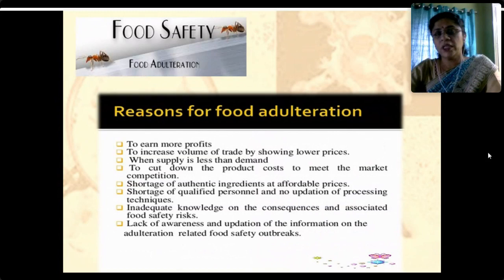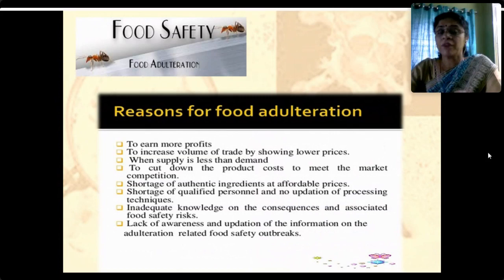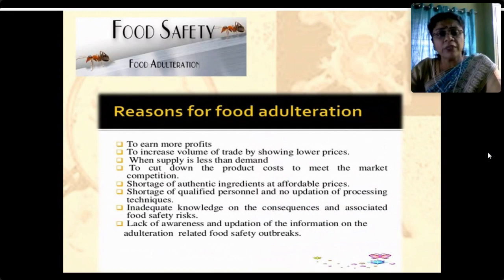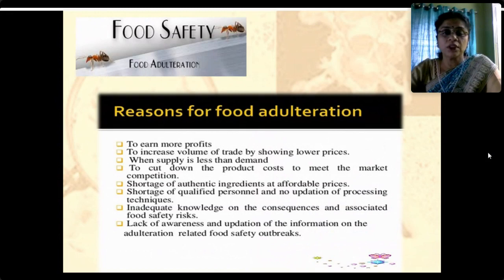The main motive behind adulteration is to earn more profits — to increase volume of trade by showing lower prices when supply is less than demand. Our population is increasing enormously, creating huge demand with very less supply. This shortage pushes food manufacturers and traders to cut down product cost and meet market competition. Shortage of authentic ingredients at affordable prices, shortage of qualified personnel, and inadequate knowledge of food safety risks — both from the consumer and the trader angle — also contribute.